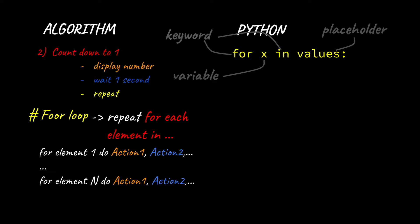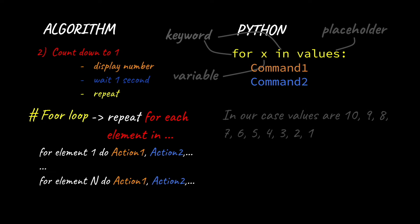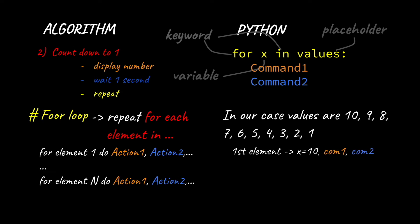If that is not clear, don't worry because we're going to see it better in a few seconds. Right after declaring the cycle, we're going to write down a list of commands to get all the actions done — notice how all the commands are shifted to the right. As we've seen in the last episode, this is called indentation. It is used to group together all the commands that belong to the for cycle, meaning they must be executed only during the execution of the for loop. In our case, the set of values are going to be the numbers from 10 to 1.